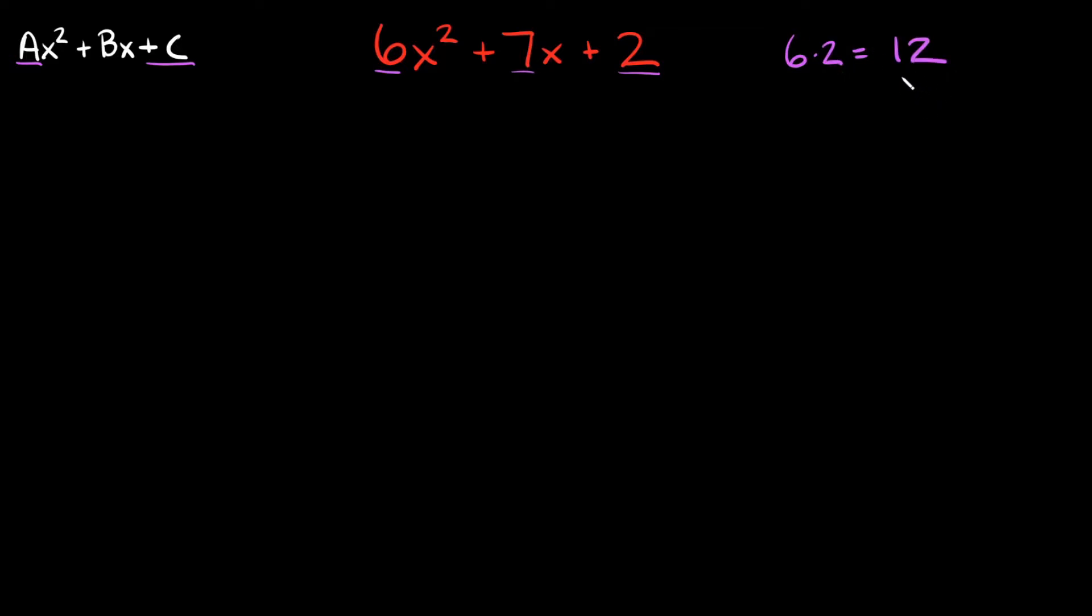Now what are two numbers that multiply to 12 but they also add up to 7 to your B term right here? Well that would be a positive 3 and a positive 4.